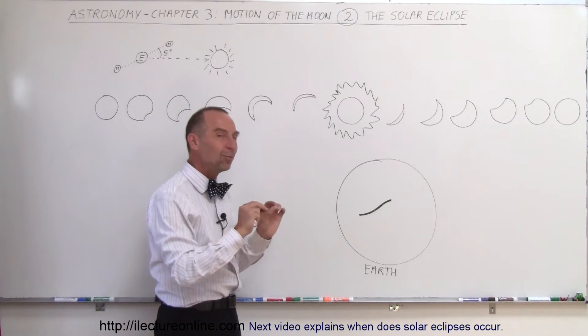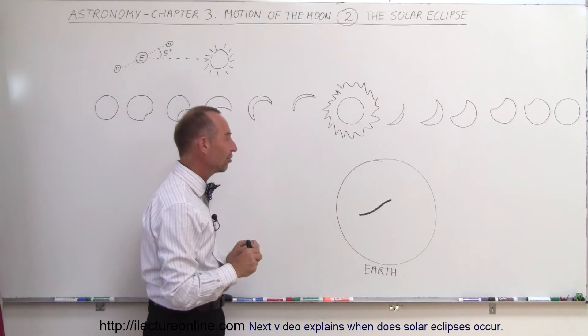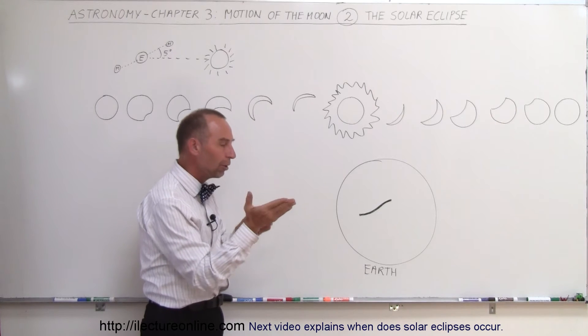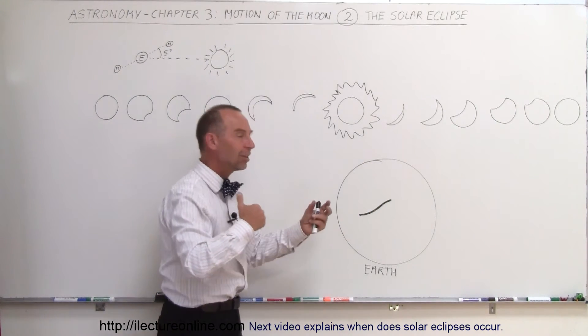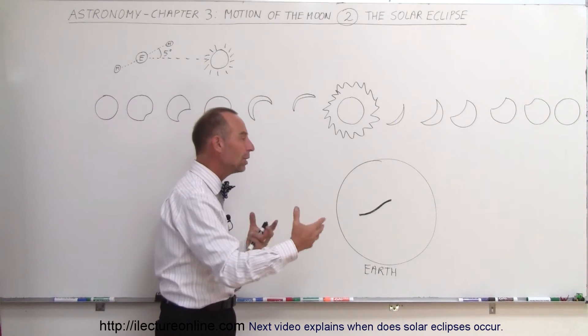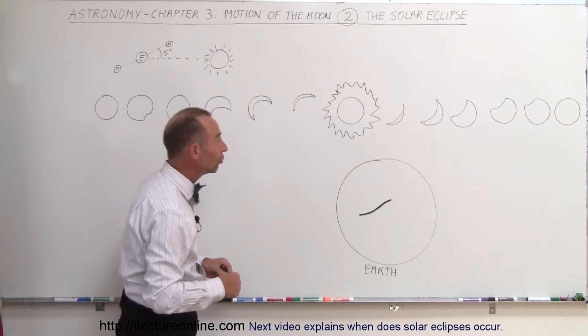And because of that, the Moon just barely covers the disk of the Sun, and the shadow formed just forms a nice little strip that then moves across the Earth as the relative motion of the Earth to Moon and relative to the Sun, of course, ensues.